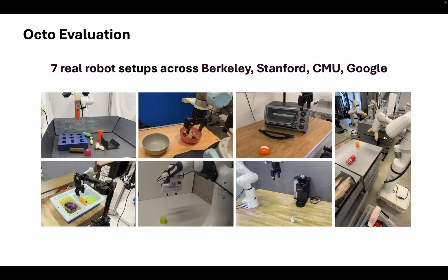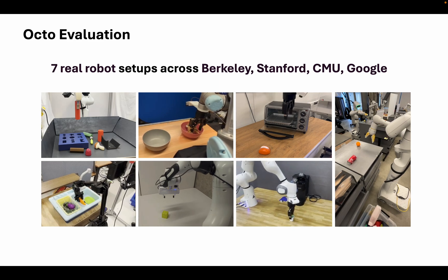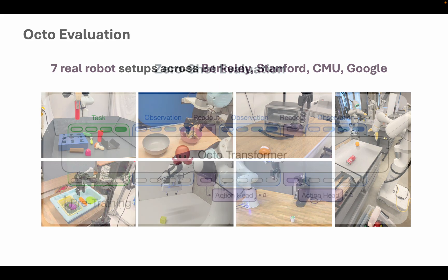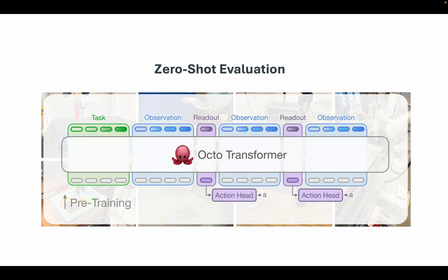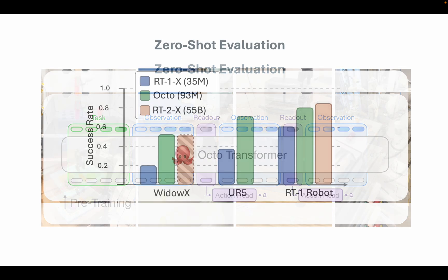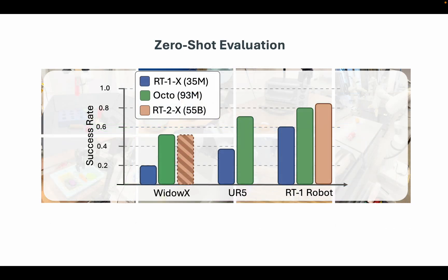Octo can be used in two main ways. First, it can be used to control robots that it saw in pre-training straight out of the box. In this zero-shot framework, we found that Octo outperformed RT1X, the previous state of the art in generalist robot policies. It works better in particular in unseen scenes and when there are distractor objects. We found it even competitive with RT2X, which is a giant VLM with 500 times more parameters than Octo.